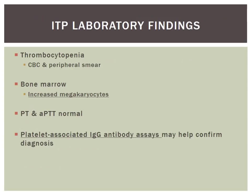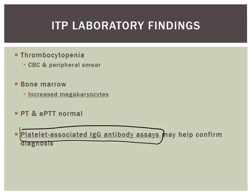Laboratory findings in ITP include thrombocytopenia on CBC or peripheral smear. Pseudothrombocytopenia must be ruled out using a peripheral smear or sodium citrate tube. On bone marrow, you will see increased megakaryocytes — indicating this is a peripheral destruction problem, not a bone marrow production problem. PT and APTT are normal since this is a platelet issue, not an extrinsic or intrinsic clotting problem. Diagnosis is confirmed by a platelet-associated IgG antibody assay.